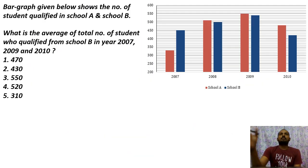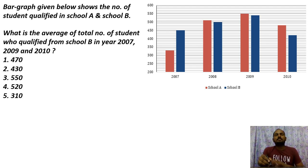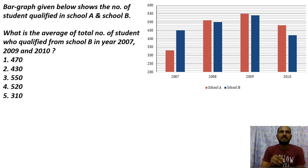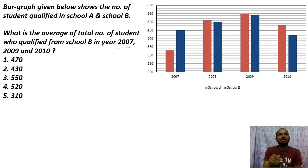Second set. So first set — same bar graph. This is a previous year memory-based question. The bar graph given below shows the data. Question: What is the average total number of students who qualified from School B in 2007, 2009, and 2010?